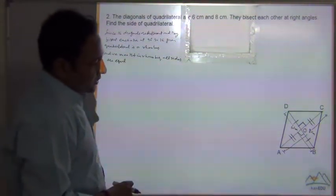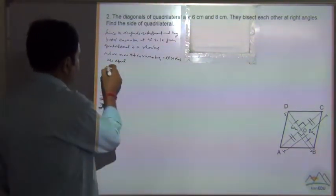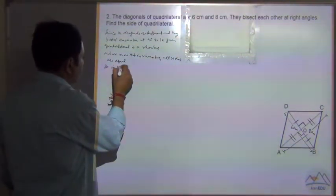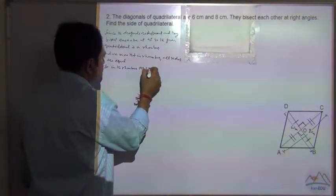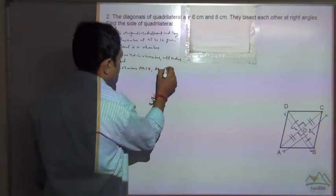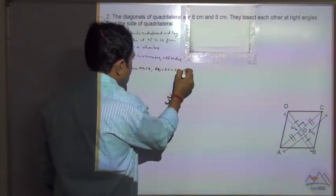So in the rhombus ABCD, AB is equal to BC is equal to CD is equal to DA.